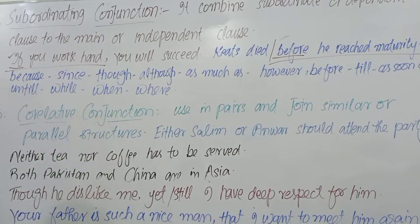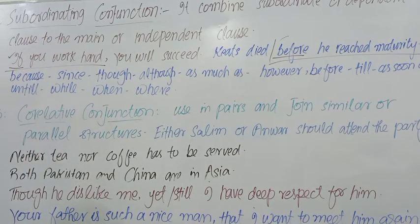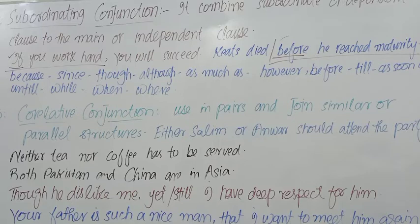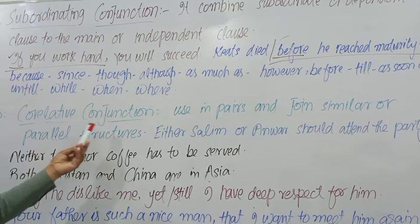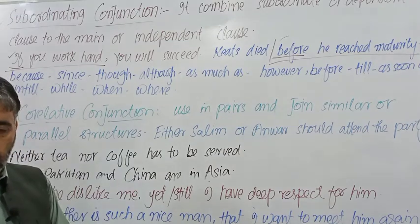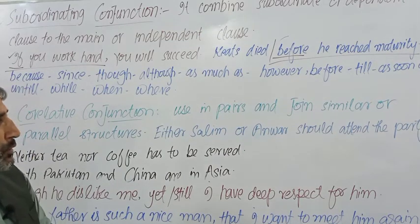تیسری قسم correlative conjunction ہے. Correlative بھی subordinate سے ملتا جلتا ہے. بعض grammarians ان دونوں کو ایک ہی conjunction سمجھتے ہیں اور بعض کہتے ہیں یہ اپنے آپ میں ایک الگ conjunction ہے. Correlative conjunction خاص کر جوڑوں میں استعمال ہوتا ہے، یعنی جوڑے کی صورت میں استعمال ہوتا ہے.